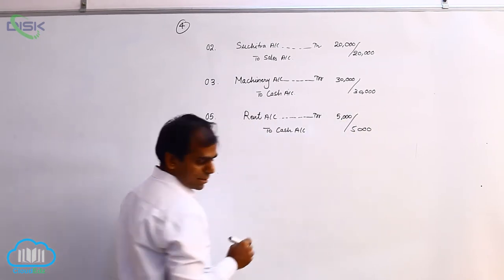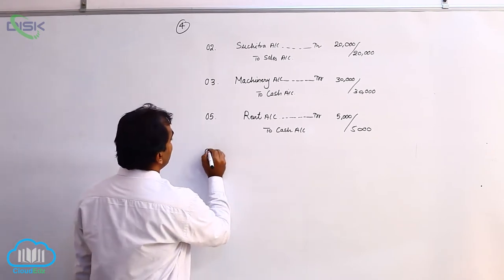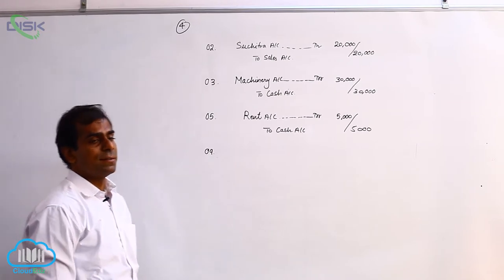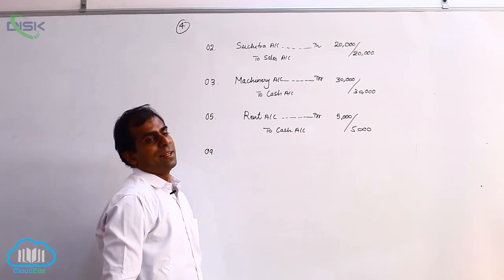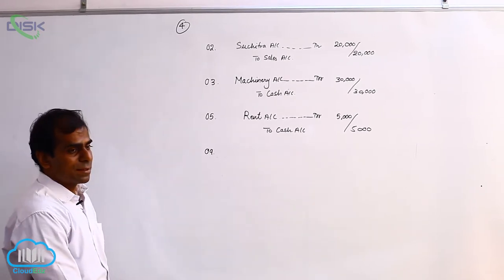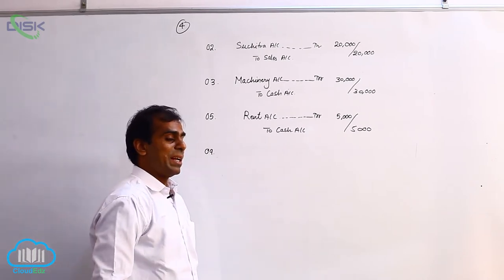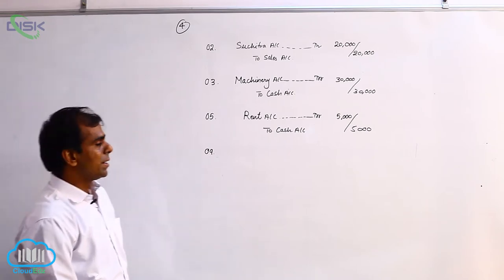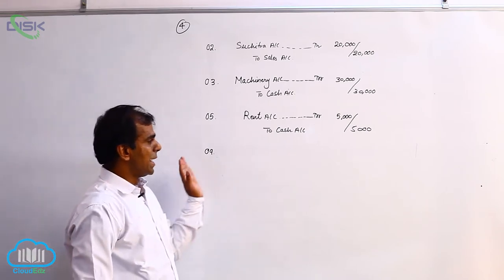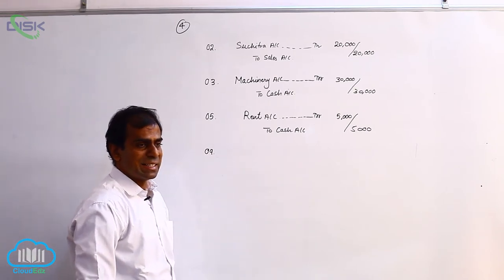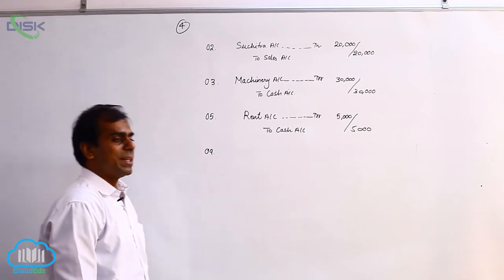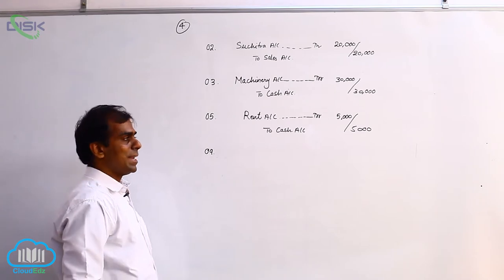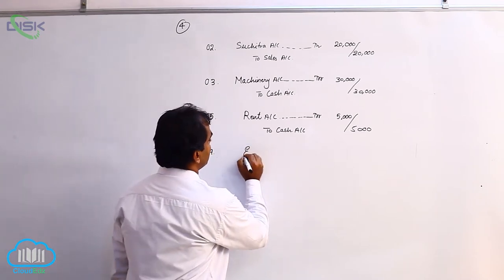Now, next. The next is on ninth, we have paid electricity bill. Electricity is a service which we enjoy and we pay the charges at the end of the month. So, it is a monthly payment or a periodical payment and it is an expense. So, recalling, applying the idea of expense to electricity, we categorize nominal account. Since we are paying it as an expense and we say debit all expenses and losses.